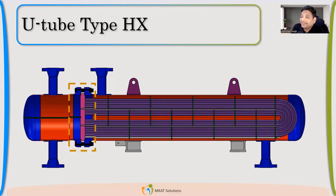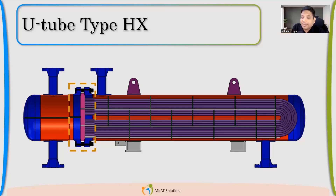So once it is integral, either it will be integral with the channel — then it will become channel side integral. Or maybe it can be integral with the shell side as well. We'll talk about the difference because that is also possible. You might ask why not weld this tube sheet and make it integral with the channel. It is possible. That configuration is also possible — that is what we are going to talk about.